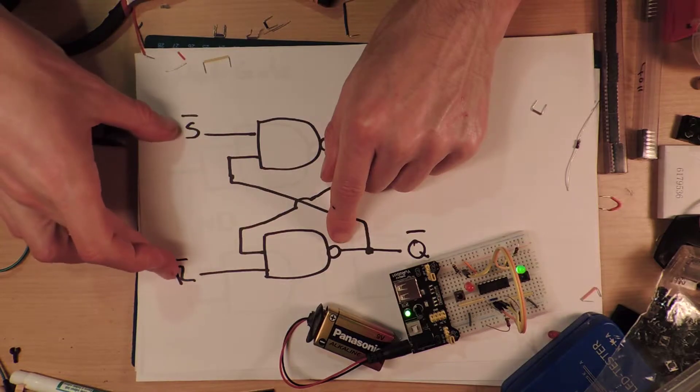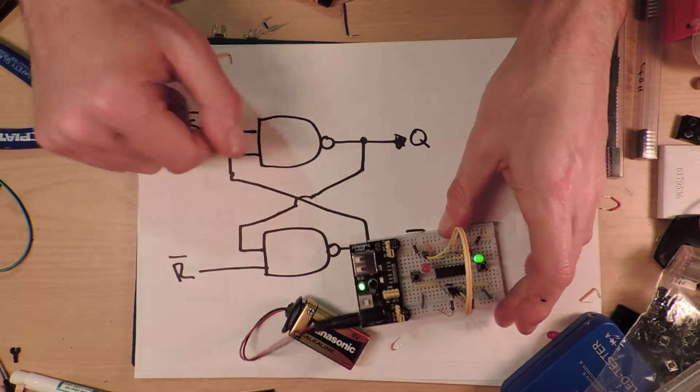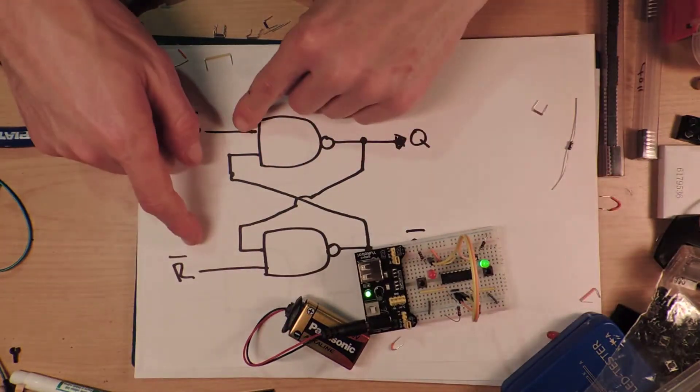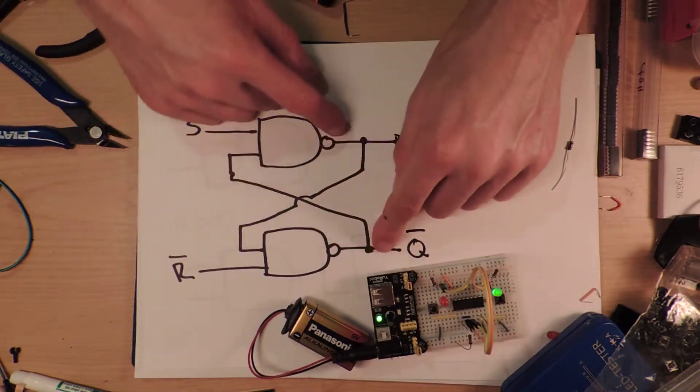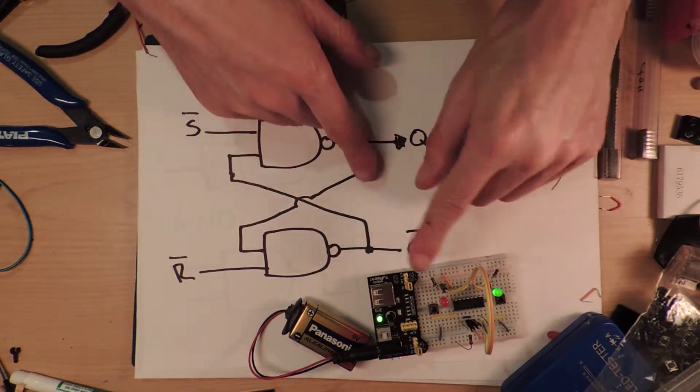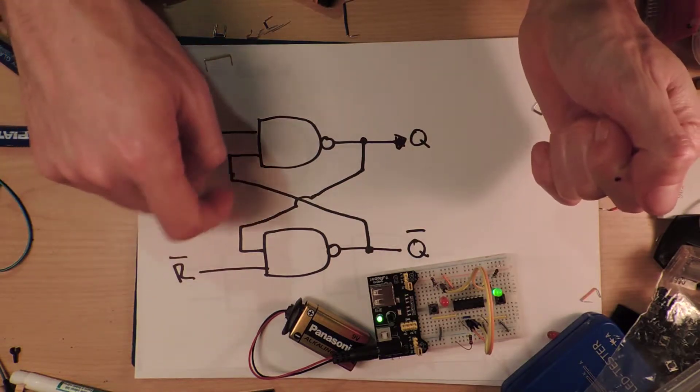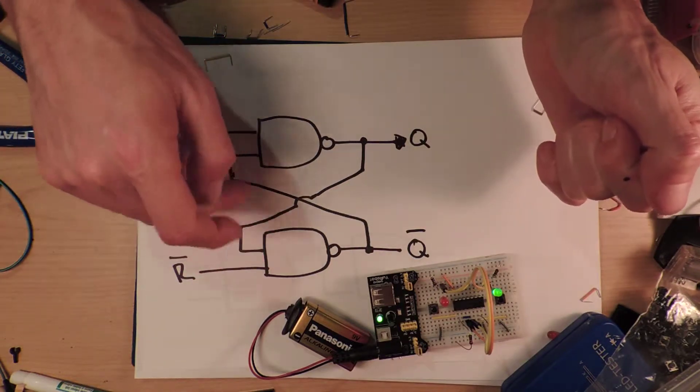So if both of these are low, which is what I had before because I had them tied to ground, then the output is always going to be high. And so you get both of these being high, which is what you saw before.